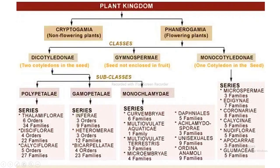The plant kingdom is divided into two types: Cryptogamia (non-flowering plants) and Phanerogamia (flowering plants). Phanerogamia is again divided into three classes: the first class is Dicotyledonae, which includes two cotyledons in the seed; the second is Gymnospermae, in which seeds are not enclosed in fruit; and the third is Monocotyledonae, with one cotyledon in the seed.